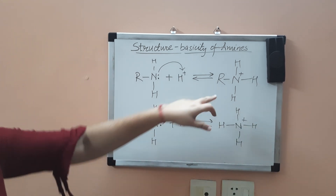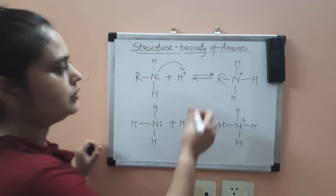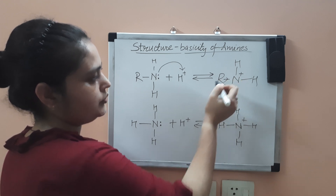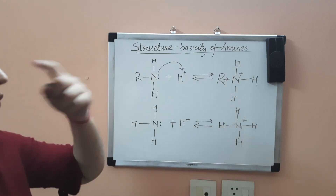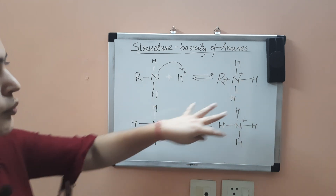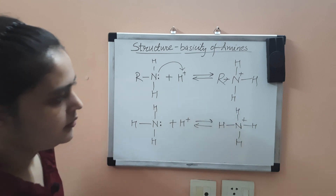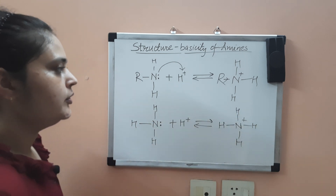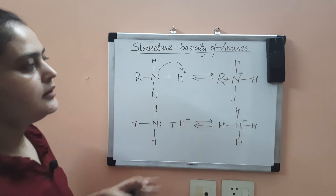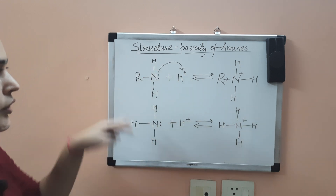In the alkane amine cation there is an alkyl group, but in the ammonia cation there is no alkyl group. Due to the inductive effect, the alkyl group releases electrons toward the electron-deficient nitrogen atom. This positive charge is therefore stabilized, but in ammonia this is not the case due to the absence of an alkyl group. The more stabilized the cation, the greater the basicity of the molecule.